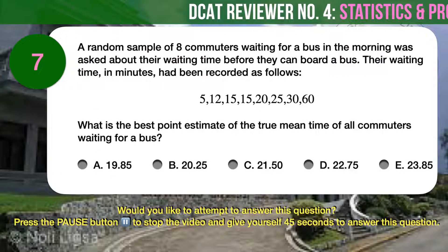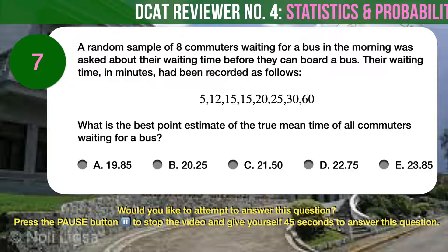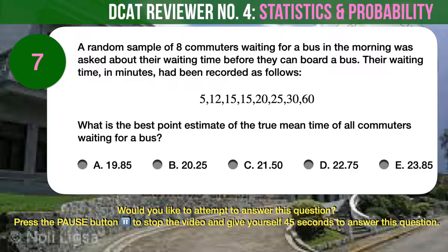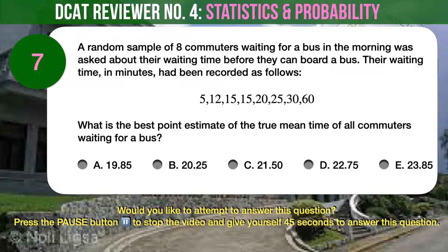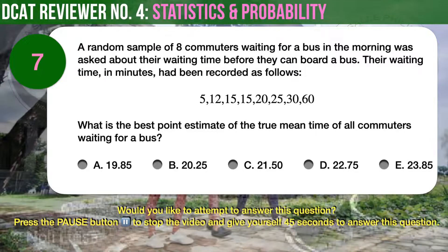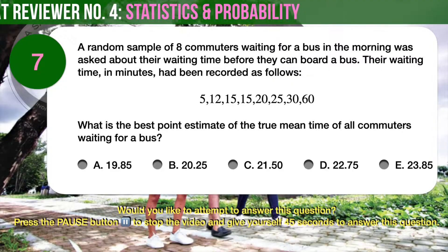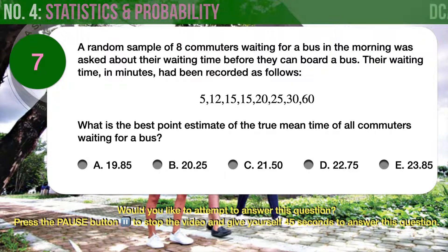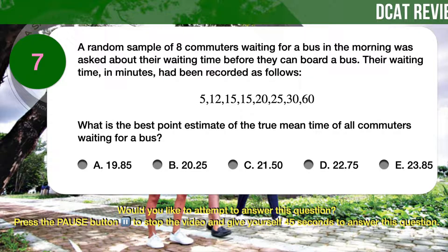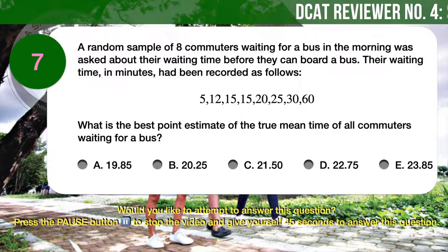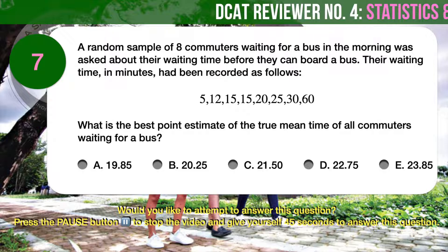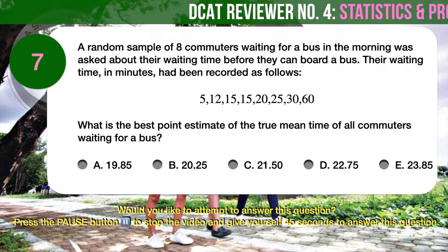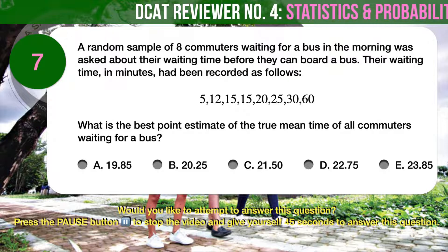Question number 7. A random sample of eight commuters waiting for a bus in the morning was asked about their waiting time before they can board a bus. Their waiting time, in minutes, had been recorded as follows: 5, 12, 15, 15, 15, 20, 25, 30, and 60.